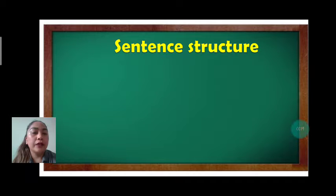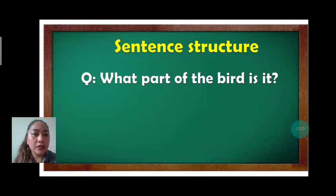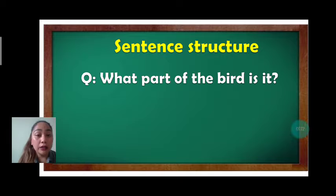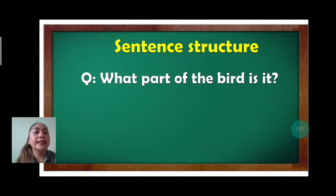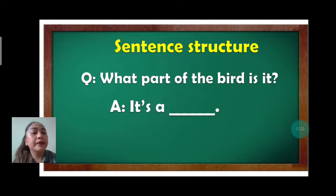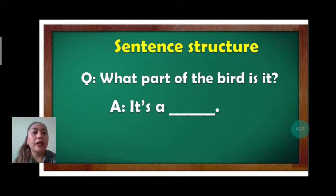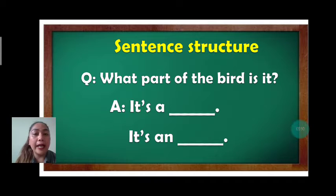For our sentence structure: What part of the bird is it? Answer: it's a blank, or it's an blank.